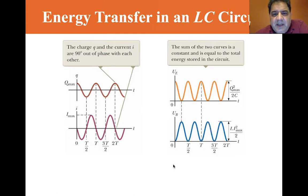This is an idealized case where conservation of energy, no energy is lost, and we'll learn that there is loss of energy. But Q max squared divided by 2C is equal to LI max squared divided by 2. If you recall, one half Q squared divided by C is energy in the capacitor, and energy in an inductor is one half LI squared.